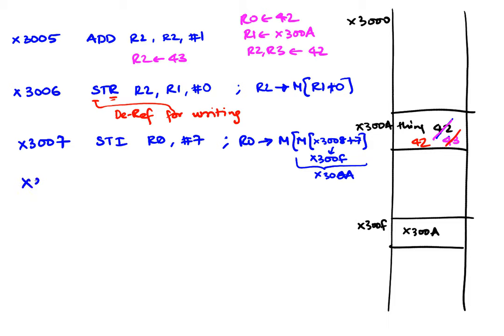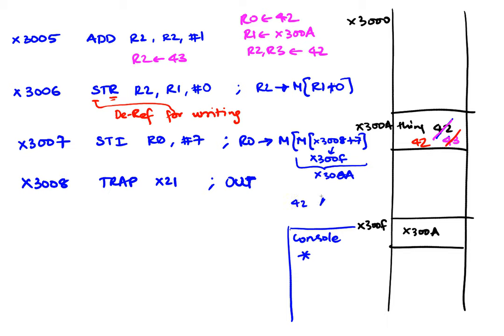At x3008 I have a TRAP instruction called OUT (TRAP x21), which outputs whatever is in register R0 to the console. Interestingly, I called it a thing and put the number 42 — TRAP x21 treats R0 as a character, not a number. So what you will see on the console is the character star, because 42 is the ASCII value for the star character. At x3009 I have TRAP x25, which halts the machine.